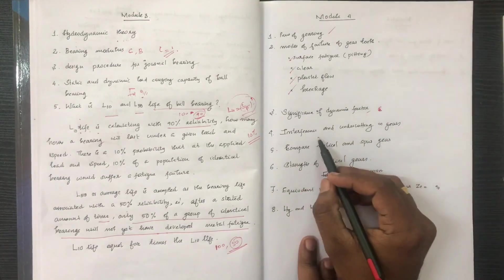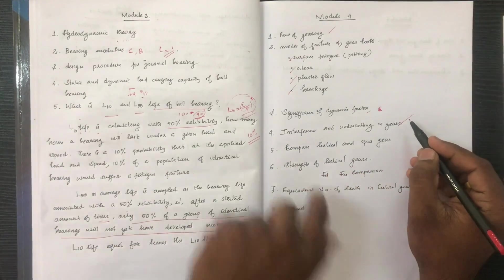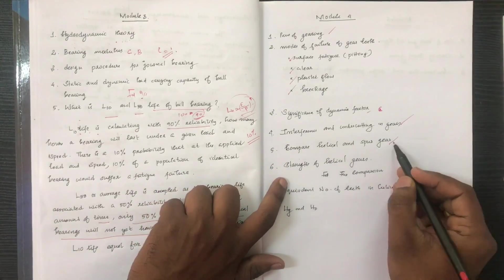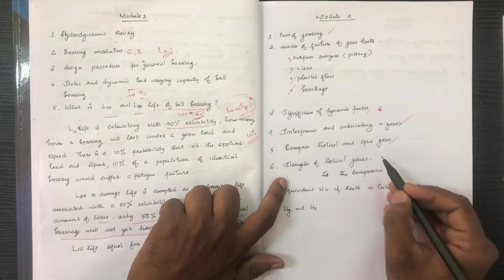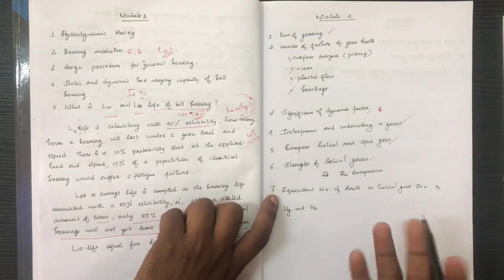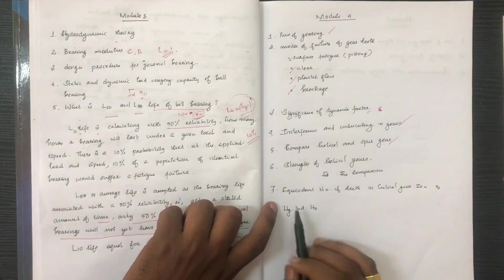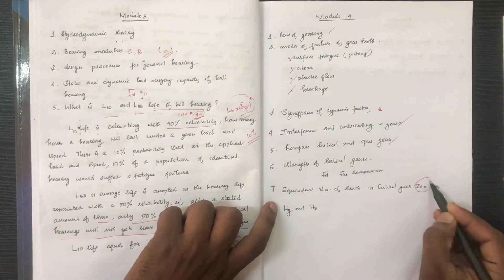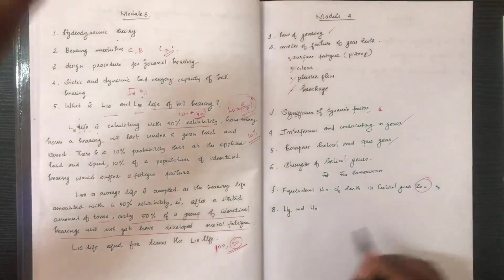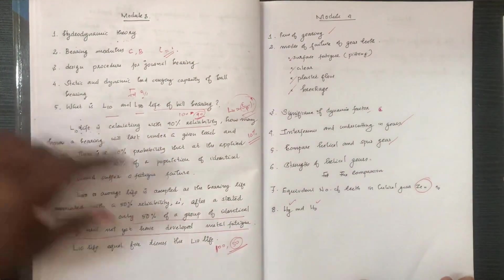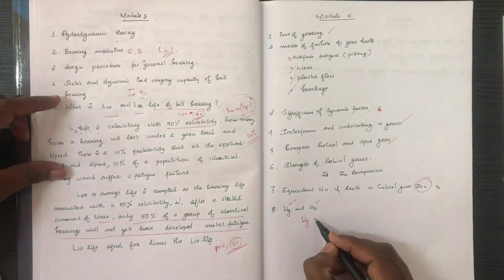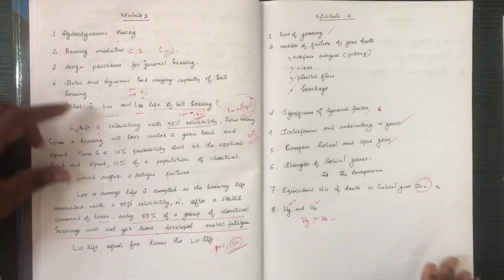We are learning about interference and undercutting in gears. The advantage is to come into helical gear. We know the strength of helical gear and can calculate forces using the equivalent number of teeth ZD and the spur gear formulation. We can also calculate heat generated and heat dissipated.